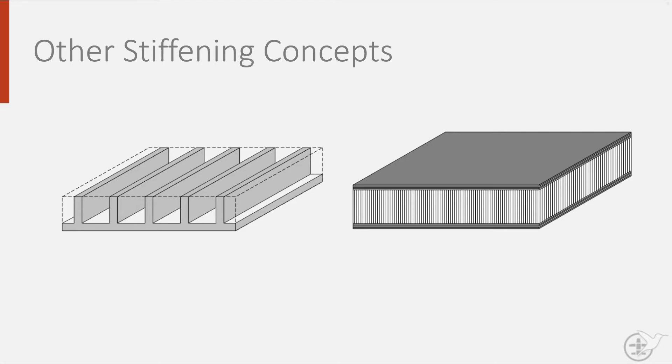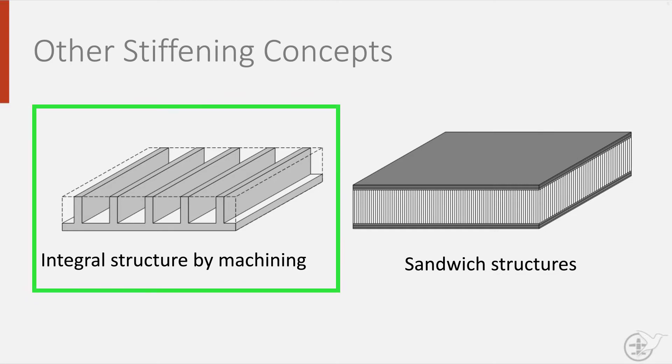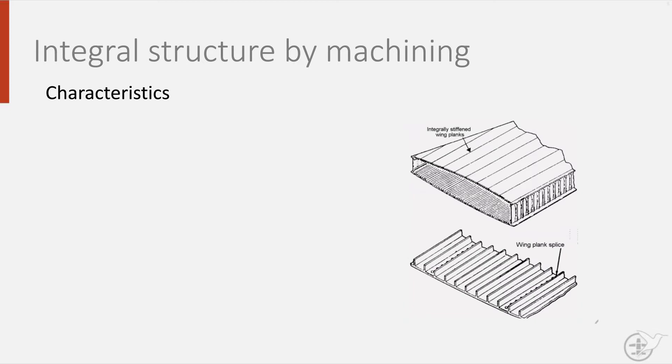Examples of this concept are integral machine structures and sandwich structures. An integral structure, as can be seen in the photo, is machined from a solid piece of metal, and has as an advantage that it is low cost and that it reduces the number of parts in your aircraft.